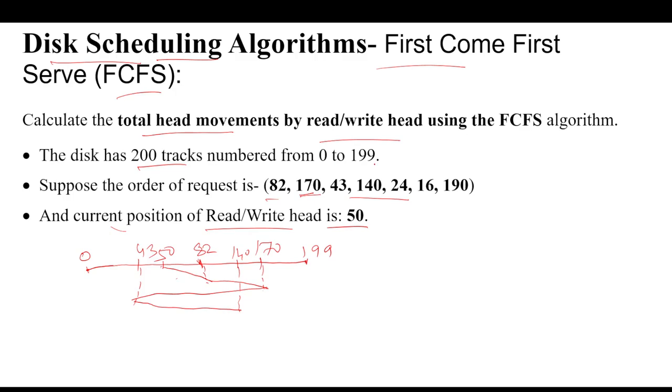Then next request is 43. Suppose 43 is here. That means from 140 we have to move toward 43. Wait, the request is actually 24 first, then 16. From 170 to 43, then 43 to 140. After that from 24 to 16. Now only one request is present, that is 190. 190 could be at this position. So from 16 to 190.